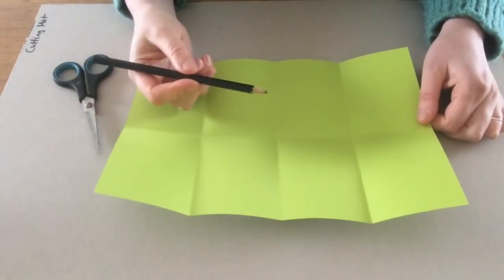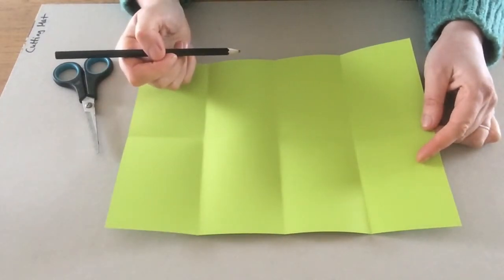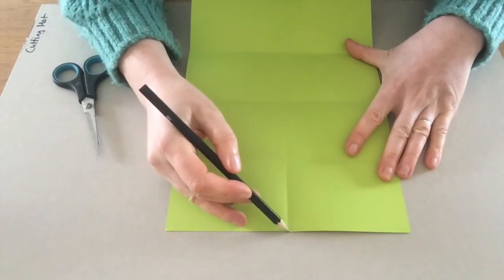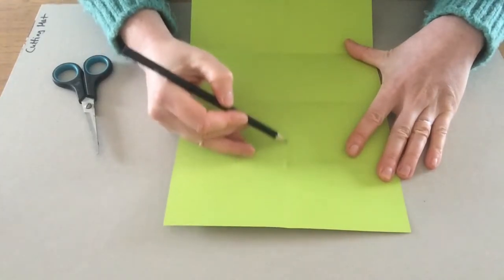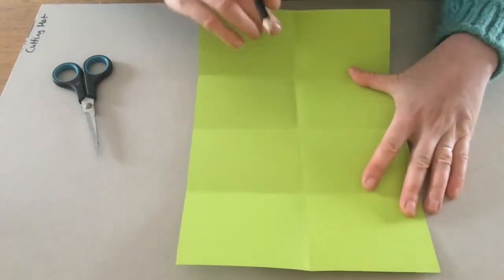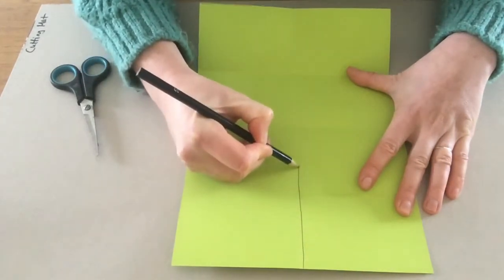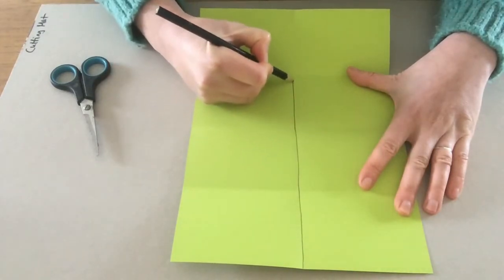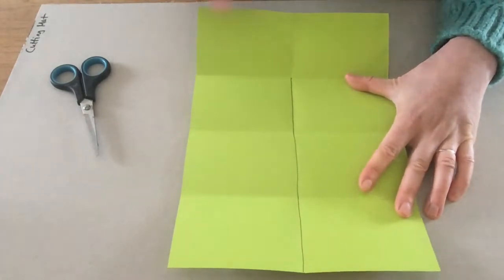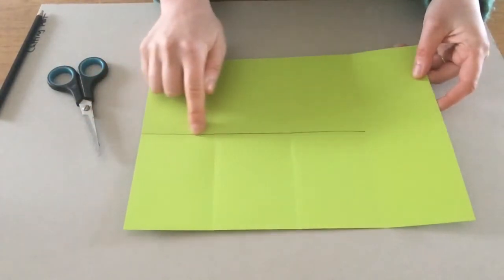So you need your pencil for this step. So what we're going to be doing is we're going to be making a line where we're going to cut. So we're going to make a line starting at the bottom and coming up one, two, three folds. Okay, so that's starting at the bottom, coming up one, two, three folds and stopping there. So you don't do any line at the top here. So once you're happy with your line, what we're going to do next is cut along this line to make our book.